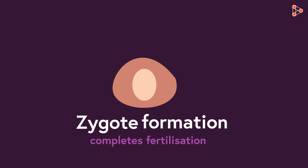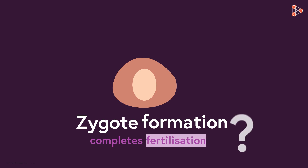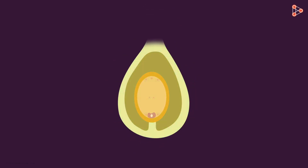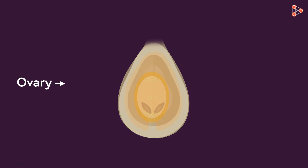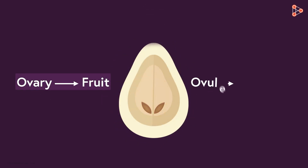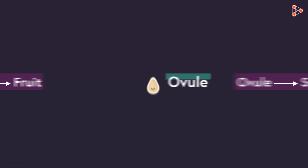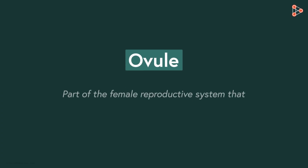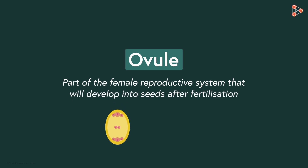What happens next, once fertilization is successfully accomplished? After fertilization, the ovary develops into a fruit and ovules develop into seeds. What is an ovule? An ovule is a part of the female reproductive system that will develop into seeds after fertilization.